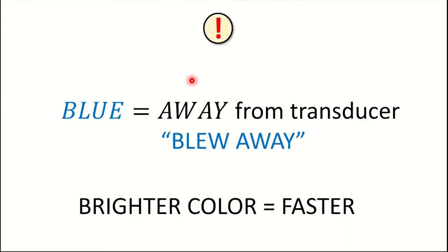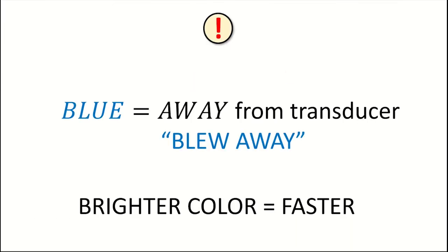Here's how to remember it: blue equals away from the transducer — the fluid is flowing away. The mnemonic is 'blue away,' like blown away from you or the transducer. A brighter color means a faster velocity of fluid flow. And if you remember from physics, flow rate is a constant equal to the area of the pipe times the velocity of fluid flow — decrease the area and you increase the velocity. So if you see an increase in velocity, you might suspect a partial obstruction decreasing the area, such as an obstructing clot.